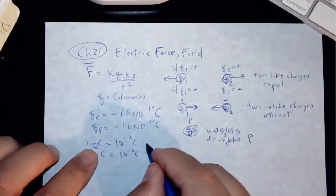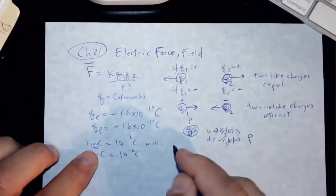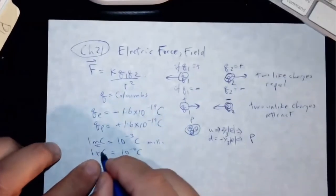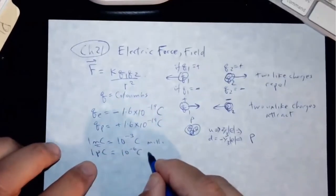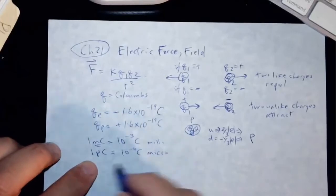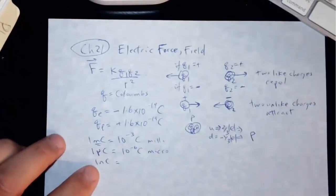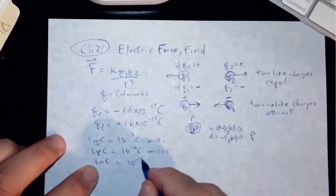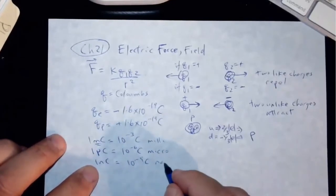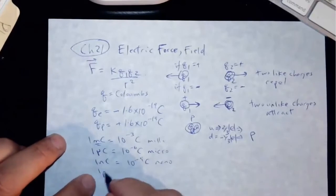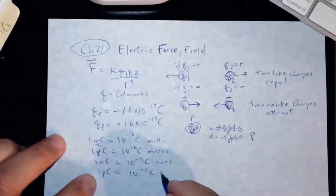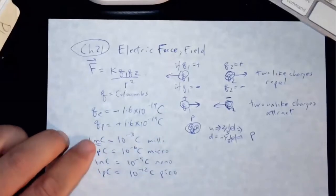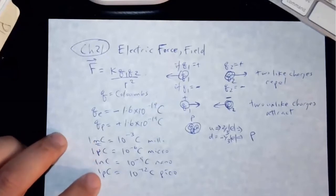So to say this, you say milli. And then micro is the Greek letter mu, microcoulomb. And one nanocoulomb is 10 to the minus 9 coulomb. And one picocoulomb is 10 to the minus 12 coulomb. So picocoulomb. So everyday charges that we encounter might be those kinds of charges.